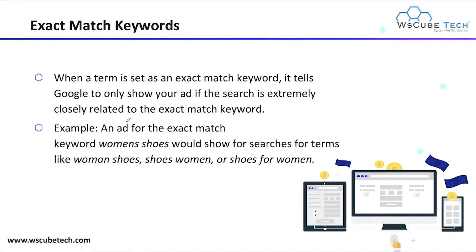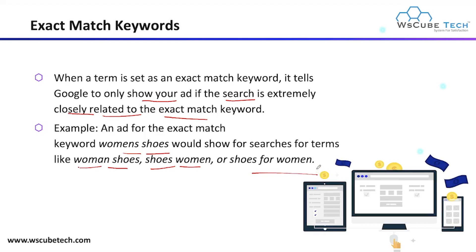Now we have Exact Match, which means exactly the word we are using. When a term is set as an exact match keyword, it tells Google to only show your ad when someone searches for a keyword like 'women shoes' or 'shoes for women' — terms that are very closely related to the exact match keyword.